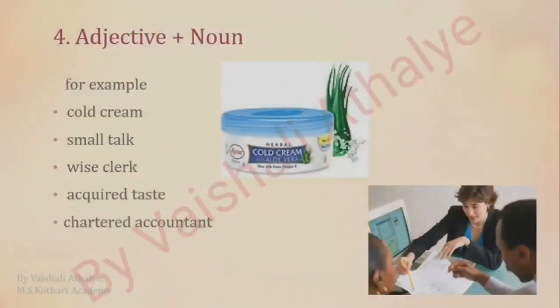The fourth way to form a compound word is adjective plus noun. Here are some examples: cold cream, small talk, vice clerk, acquired taste, chartered accountant. All these compound words have an adjective first and then a noun.